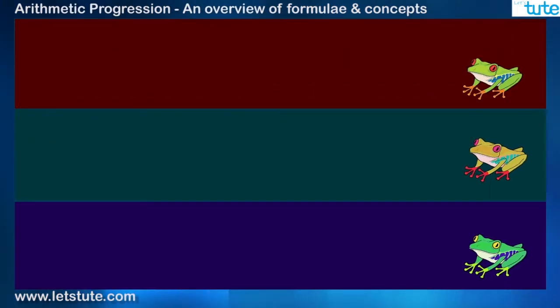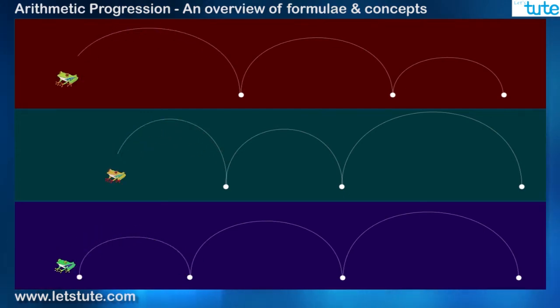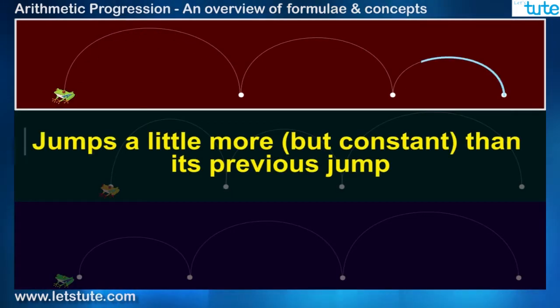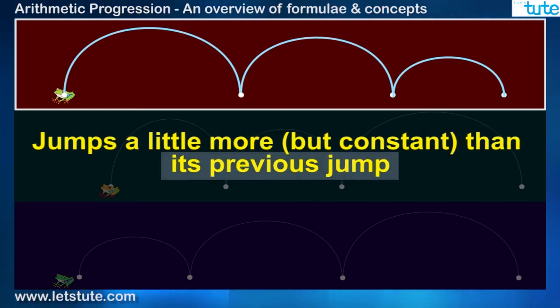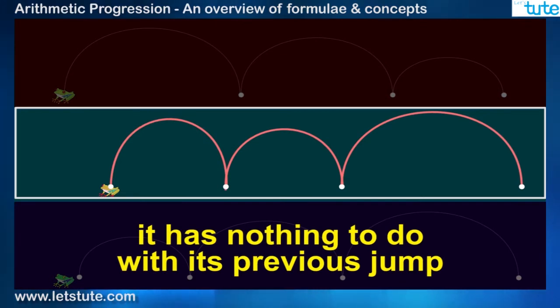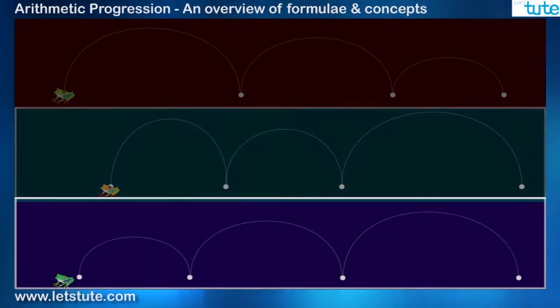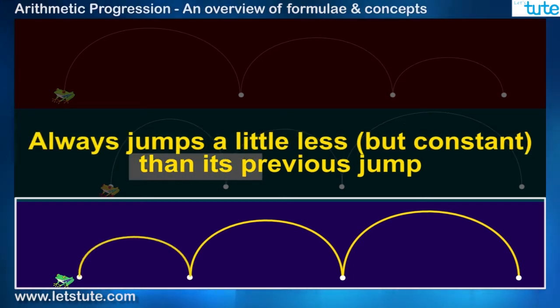Here there are three frogs and all of them have a different style of jumping. Frog 1 always jumps a little more but constant than its previous jump. Frog 2 always jumps in any length, it has nothing to do with its previous jump, whereas frog 3 always jumps a little less but constant than its previous jump.